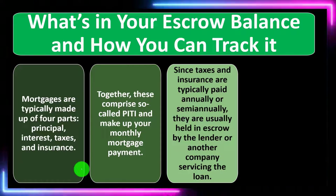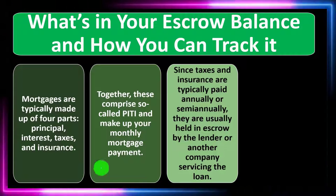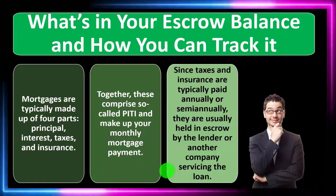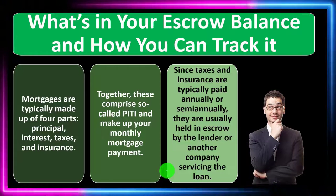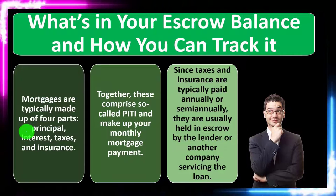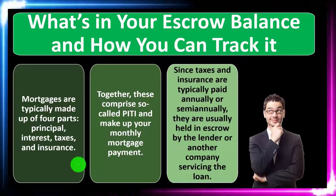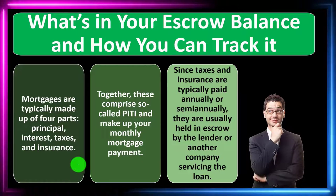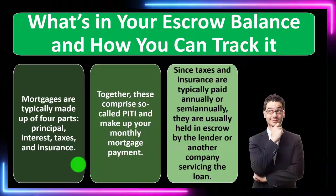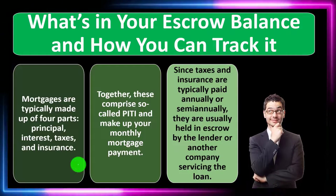Since taxes and insurance are typically paid annually or semi-annually, they are usually held in escrow by the lender or another company servicing the loan. If you're trying to wrap everything into one monthly payment, the loan itself is structured as an installment loan so payments are the same each month. Taxes and insurance are usually paid yearly or semi-yearly to a government entity or insurer, so we estimate how much we'll need and divide by 12, combining that into the monthly payment.